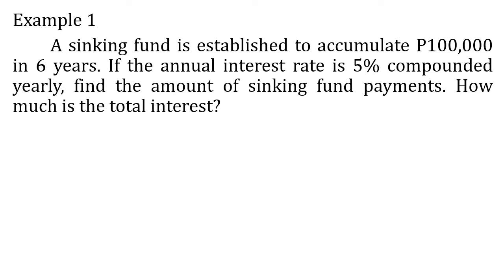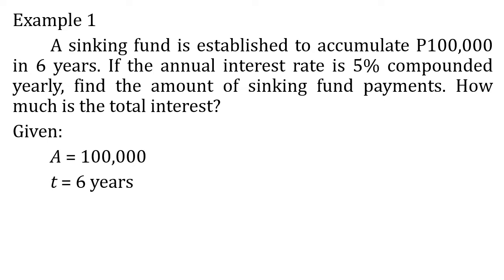For example, a sinking fund is established to accumulate 100,000 pesos in six years. If the annual interest rate is five percent compounded yearly, find the amount of sinking fund payments and how much is the total interest. So let us list the given first: the future value is 100,000, time is six years, r or rate is equal to five percent or 0.05, and m equals one.